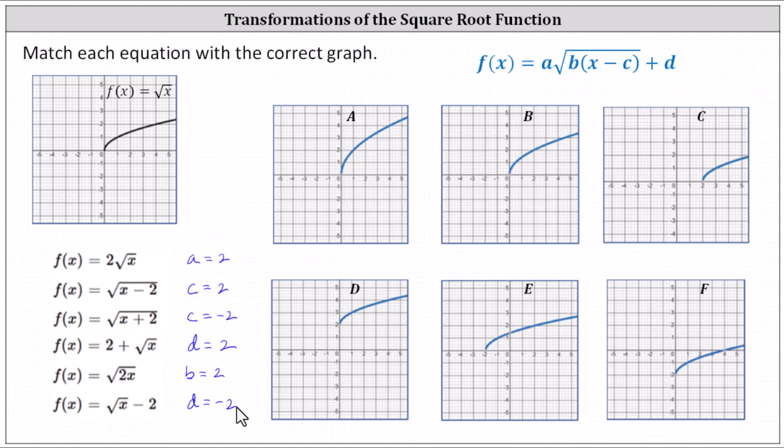It may be helpful to find two key points on the basic square root function graphed above to better recognize the type of transformation. For example, let's use the points (0, 0) and (4, 2).